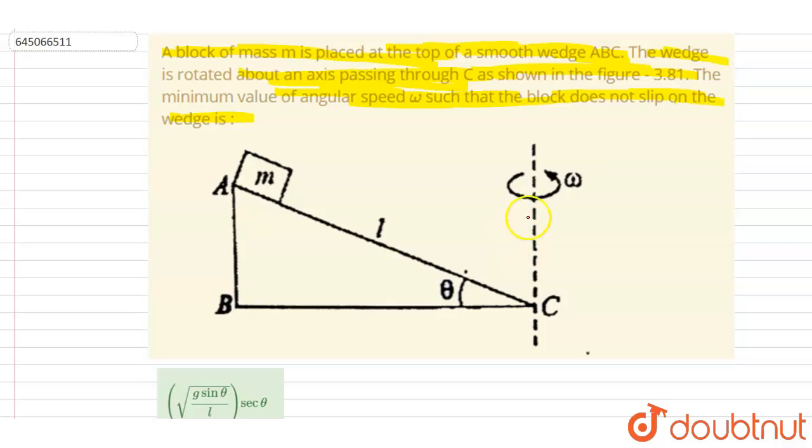So if you see, this block plus wedge system is rotating with an angular speed omega. If you see the distance of this block from this axis of rotation, you can get this value. You know that this angle is theta, so this length will be l cos theta. If you see from the frame of this wedge...